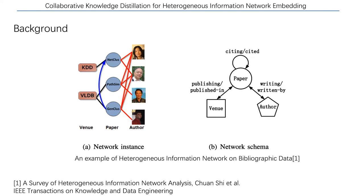Existing HIN embedding methods have largely followed a common learning framework. First, the HIN is projected to several homogeneous information networks with a single type of node and edge, such as the user interaction relationship and the user-watches-same-movie relationship. Then, based on homogeneous information network embedding methods such as GraphSAGE, GCN, and GAT, we can learn the embedding for nodes in each homogeneous network — we call this metapath-based embedding. Finally, we transform and fuse the metapath-based embeddings and output the final embedding.